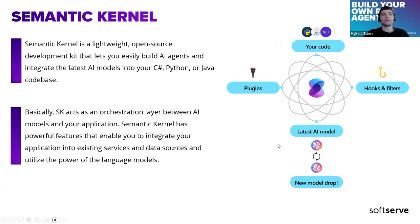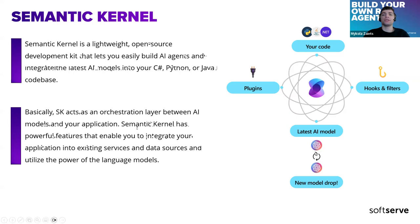Now let's talk about Semantic Kernel. It's a really cool open-source development kit that lets you easily build your own AI agents and integrate the latest AI models into your application — whether it's C#, Python, or Java codebases. The cool thing is that you're really able to easily switch the AI model for a new one or just a different open-source model. It basically works like an orchestration layer between AI models and your application.